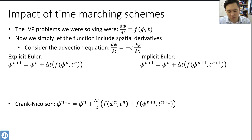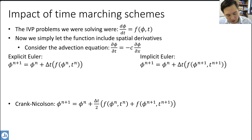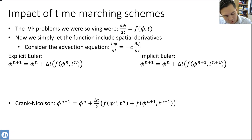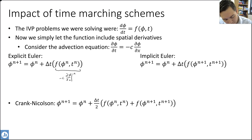So if we say d phi/dt is equal to minus c times d phi/dx, that becomes our partial differential equation. What we discussed last time is that we can substitute that f term — identified as minus c d phi/dx — into our time marching equation. For the explicit case that would be minus c d phi/dx evaluated at time index n, and for the implicit case it would be evaluated at time index n plus 1.